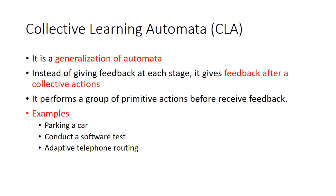There is another form of learning automata — it is a generalization of automata called collective learning automata. Instead of giving feedback at each stage, it gives feedback after a collective action. It performs a group of primitive actions before receiving feedback.